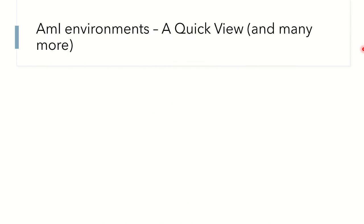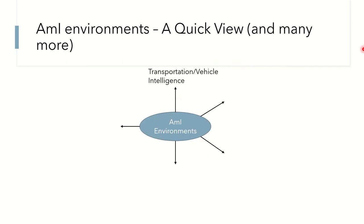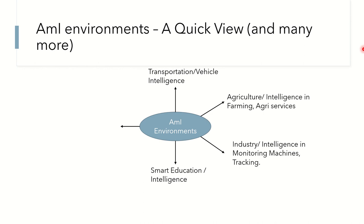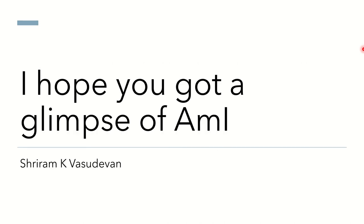Ambient intelligence can be applied in many environments. In transportation, we add intelligence to vehicles and driving environments. In agriculture, intelligence can be added to farming and agro services. In industry, intelligent machine tracking and monitoring are possible. Smart education can use augmented and virtual reality for teaching. And in smart homes, intelligence can automate things like switching on the TV to your preferred channel automatically at the right time with the right audio and lighting settings.